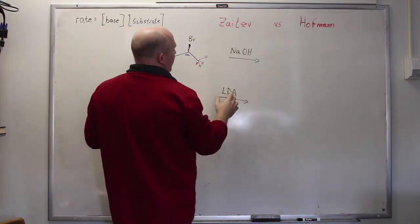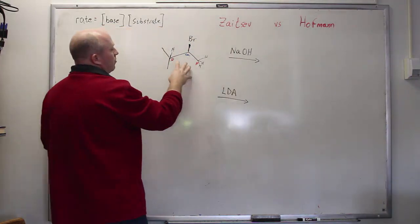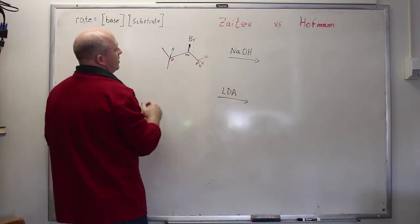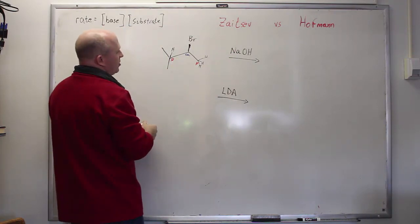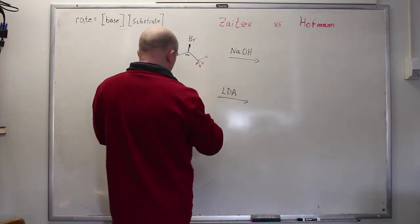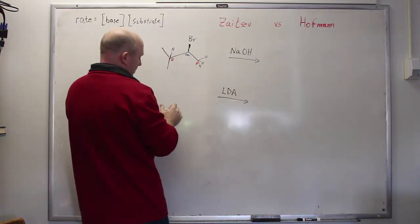So the question is, what role does the base play in this? And also the question is, which system would be preferred? Where would the elimination be preferred? So now let's go ahead and draw both possible products.